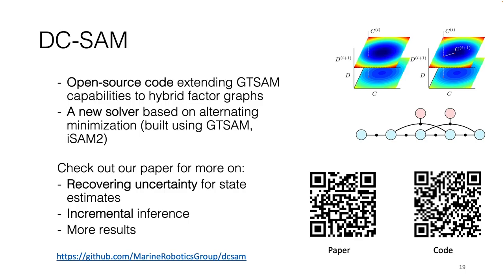To conclude, DC-SAM is our open-source library extending GTSAM's capabilities to hybrid factor graphs and providing a new solver based on alternating minimization. Our code, as well as an extended version of our paper including additional experimental results, are available at the links shown here.